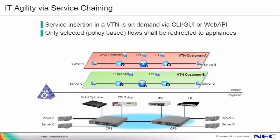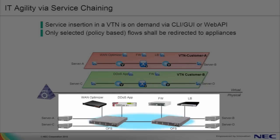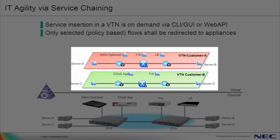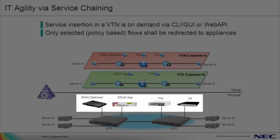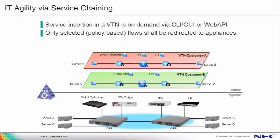To visualize how service chaining works, here we're showing a topology of a physical network at the bottom of the slide and the virtual networks deployed on the physical infrastructure. This physical network consists of a series of servers which may be running virtual machines, as well as an OpenFlow fabric shown in blue. We also have a mix of both physical and virtual network functions, including WAN optimization, DDoS prevention, layer 7 firewalling, and load balancing, also known as application delivery control. This physical network could be a public cloud provider or a service provider providing infrastructure as a service, as well as value-added network functions provided by those appliances.